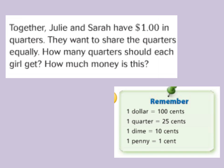First problem. Together Julie and Sarah have a dollar in quarters and they want to share the quarters equally. We want to know how many quarters each girl should get and how much money that is. Whenever we're dealing with money, we need to remember that one dollar is equivalent to one hundred cents. A quarter is equal to twenty-five cents, a dime is ten cents, and a penny is one cent.